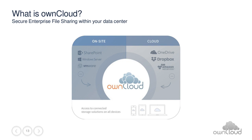OwnCloud can combine all these storage options in one single view that can be accessed with different clients. We offer clients for desktop synchronization on Windows, Mac, and Linux, as well as clients for iOS and Android. The goal is to have your data always with you and to stay in control of it. Everything that happens in OwnCloud will be logged and audited so that IT always knows what's going on.